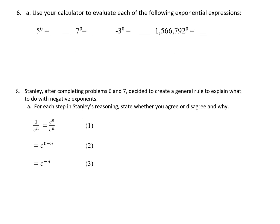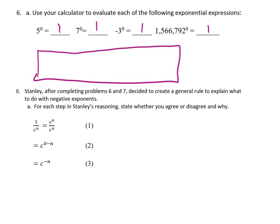Number 6 is a quick stop. If you type all these in your calculator, you will get 1. So, that creates another rule: anything to the 0 power is 1. It doesn't matter what a is — if I raise something to the 0 power, I get 1. That is the zero exponent rule.